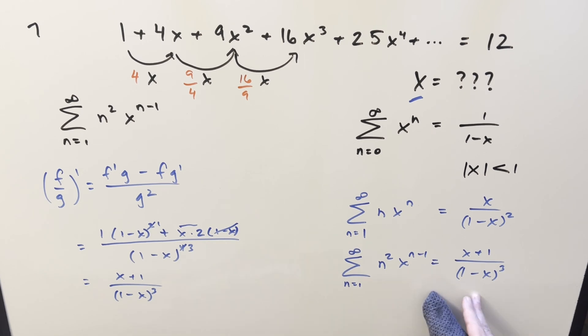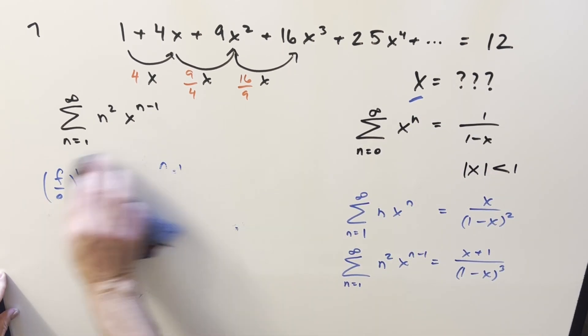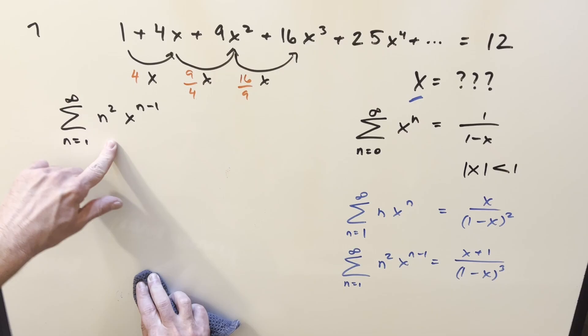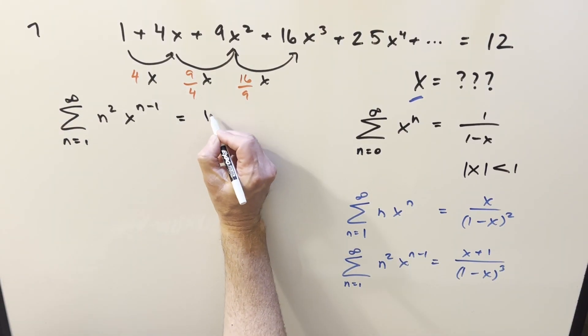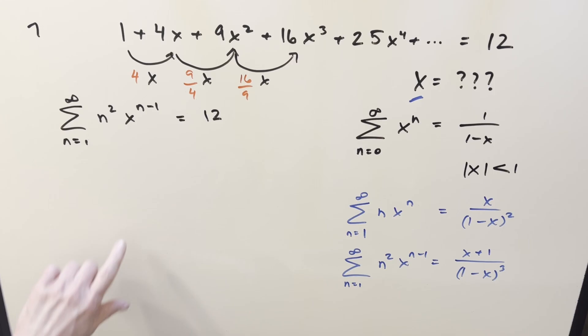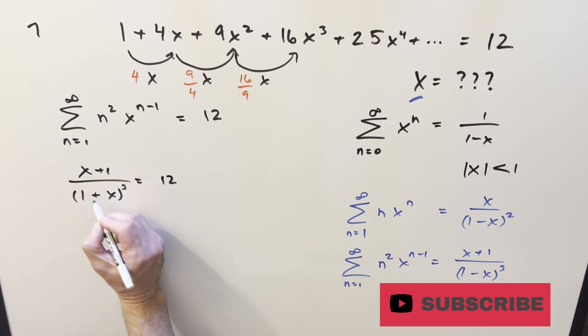And so now what we can do is take this and get back to our problem. So what we're saying is we've expressed our whole sum this way, and we're saying this whole thing, we want this whole thing to be equal to 12. But our goal is to solve for x, and it's going to be easier for me to do algebra if I put it into this form. So we're going to say x plus 1 over 1 minus x, all cubed, equals 12.